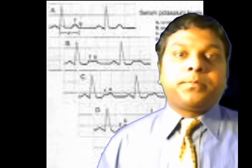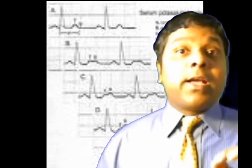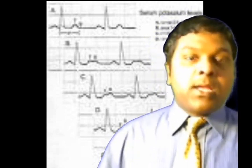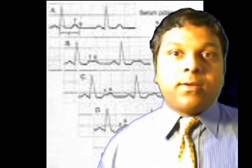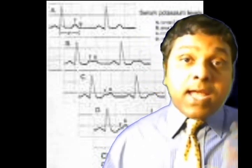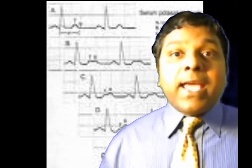Then there is another thing - trans-tubular gradients. Trans-tubular K+ gradient, TTKG. This is a very important concept. Now how do you measure trans-tubular potassium gradients? Simple: urine K+ divided by plasma K+, divided by urine osmolality divided by plasma osmolality. So urine K+ divided by plasma K+, divided by urine osmolality divided by plasma osmolality. That's the formula.